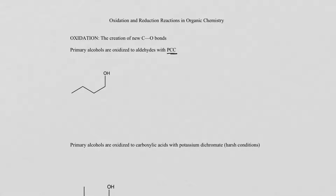This is often done with an oxidizing agent called PCC, which stands for pyridinium chlorochromate. Just think of a protonated pyridine with a nitrogen, surrounded by chlorochromate — CrO₃Cl⁻. Chromium is often found in a lot of oxidizing agents, and it's a great oxidant. But the problem is once you're done with your reaction, you have to get rid of it. So anyway, that was just a sidebar.